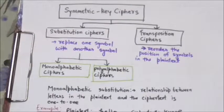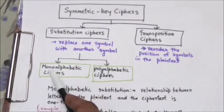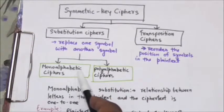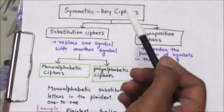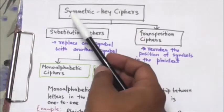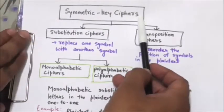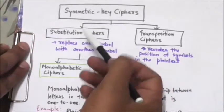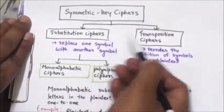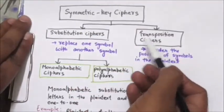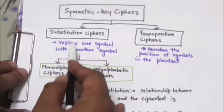Hello friends, welcome back. In this tutorial I will give you the introduction of mono alphabetic ciphers. Traditionally, symmetric key ciphers can be divided into two broad categories: substitution ciphers and transposition ciphers.